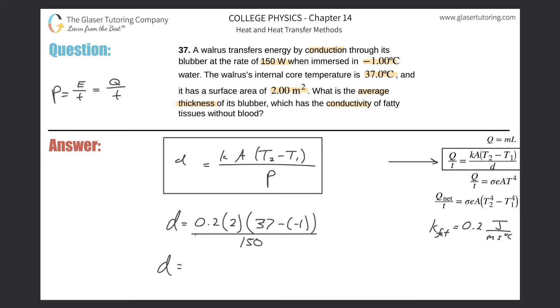That's it. I mean, this is so simple. So 0.2 times 2 multiplied by essentially 38 divided by 150. And we have a thickness here in terms of meters of 0.101, and that's in meters or basically 10 centimeters.